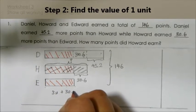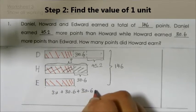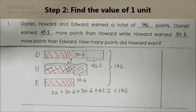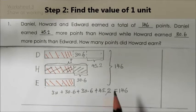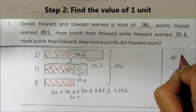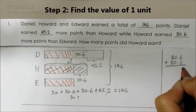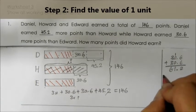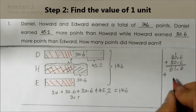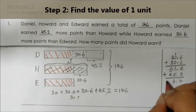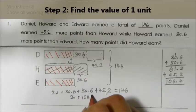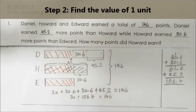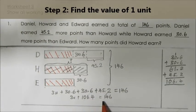Three units plus 30.6 plus 30.6 plus 30.6 plus 45.2 gives a total of 146 points. I can add these three numbers together by doing the working here. Remember our decimal point, which is important. So these three numbers add up to 106.4, giving us: three units plus 106.4 equals 146 points.